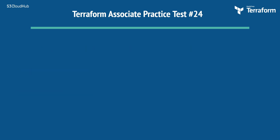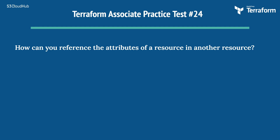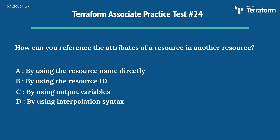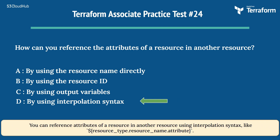Question 24: How can you reference the attributes of a resource in another resource? Options: A) By using the resource name directly, B) By using the resource ID, C) By using output variables, D) By using interpolation syntax. The right answer is D) By using interpolation syntax. You can reference attributes of a resource using interpolation syntax like ${resource_type.resource_name.attribute}.